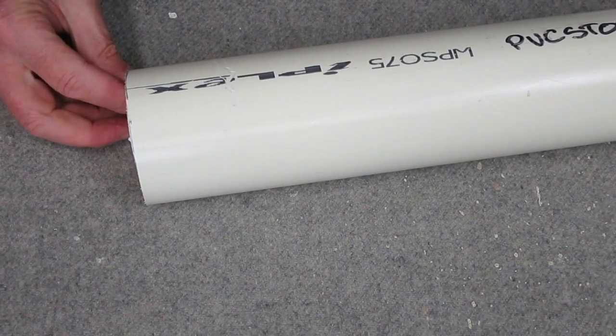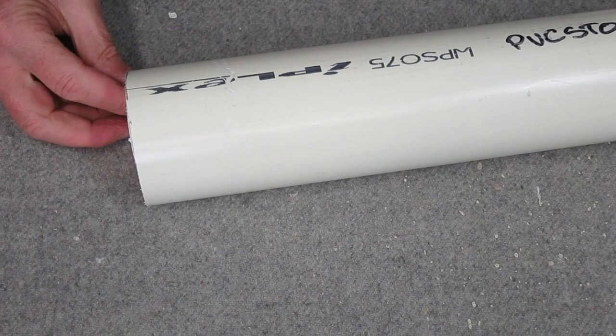PVC plastic from plumbing pipes is a very useful material. It's heat setting, which means that you can heat it up, bend it into shape, and then it'll hold its shape when it cools down.